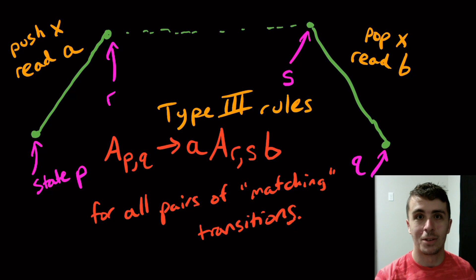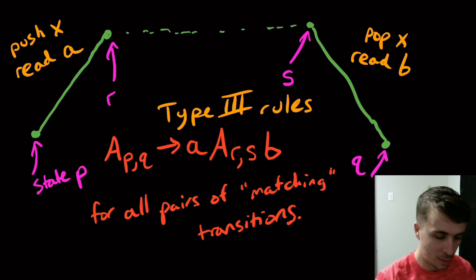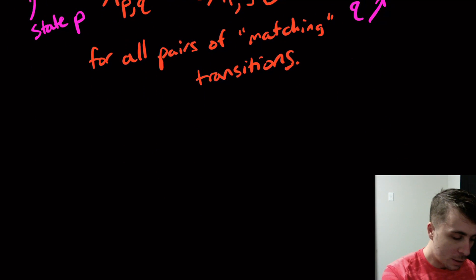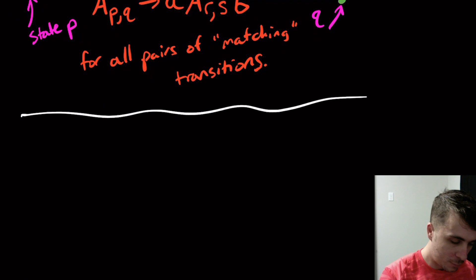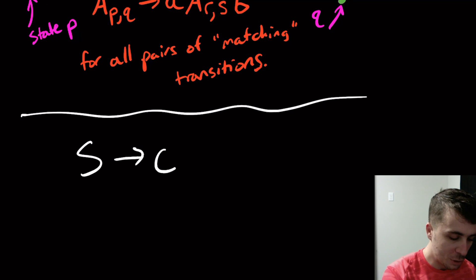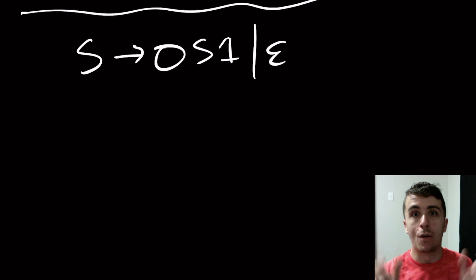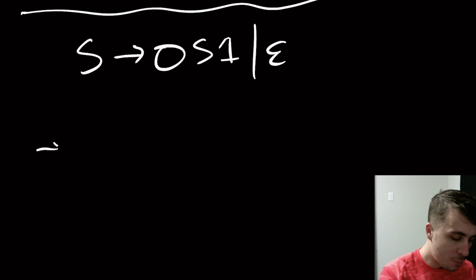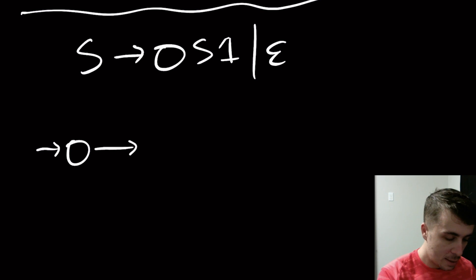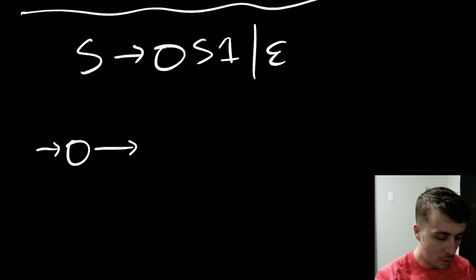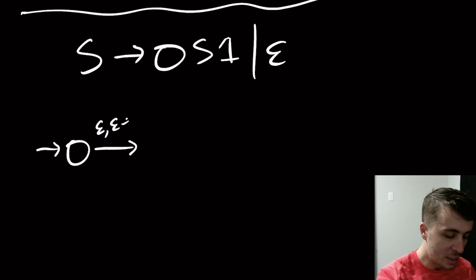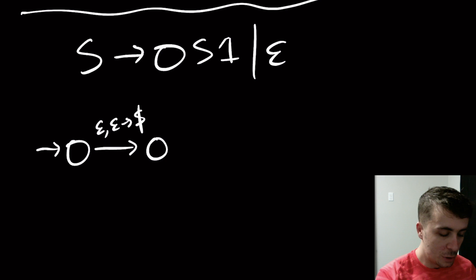Welcome to another edition of Easy Theory. Let's do an example of the PDA to CFG conversion. We know the grammar for 0^n 1^n, but I want to not have to think about what the grammar looks like — I just want to convert the PDA to the CFG. So let's actually look at what the PDA looks like. This is the standard PDA for 0^n 1^n.